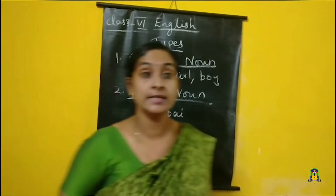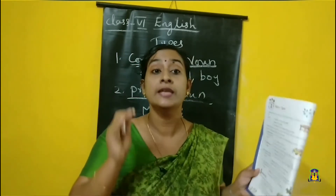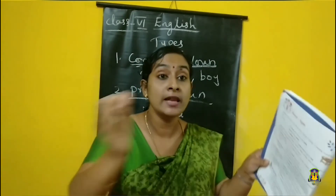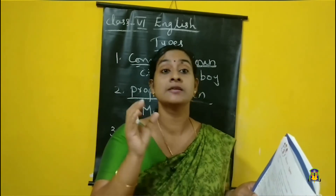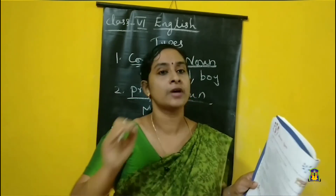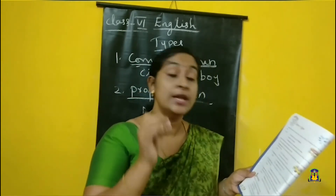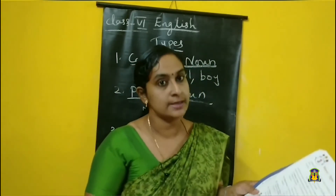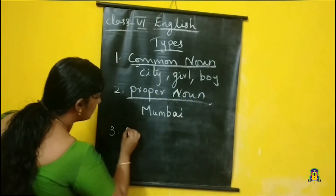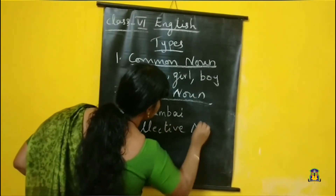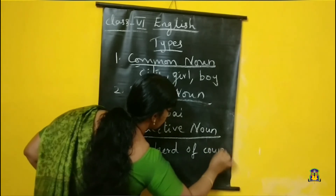The third one is collective noun. Collective noun is a name given to a person, place, thing or animal in a group, in collection. From the lesson we learned, 'a dog who found a master himself,' we learned 'a herd of cows.' Herd means group. So collective noun is the noun name given to a group of similar persons, things, or places. For example, a herd of cows — herd is a group of cows.